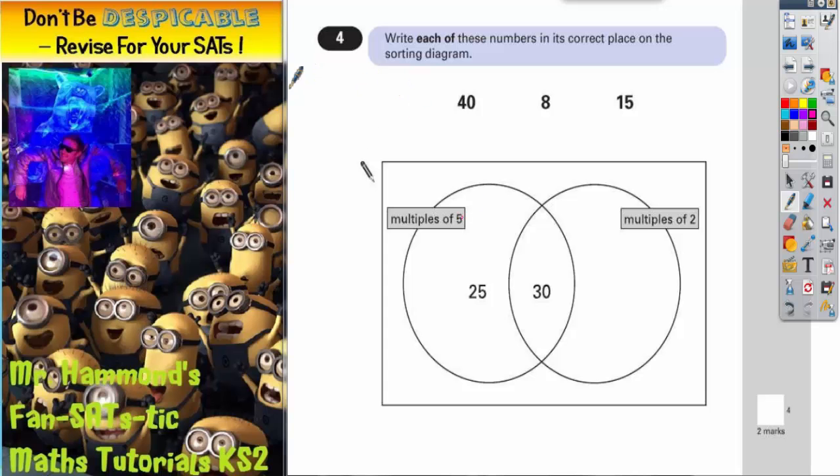A posh word for this type of sorting diagram is actually called a Venn diagram. You don't need to worry too much about that. It's just because it's named after the person who invented it. It was called John Venn.